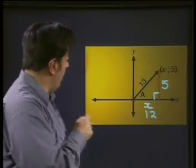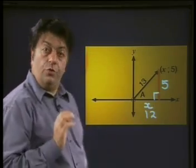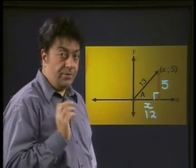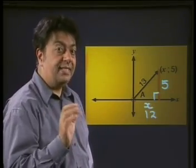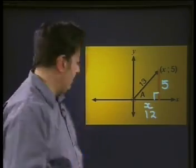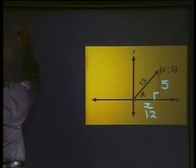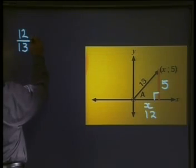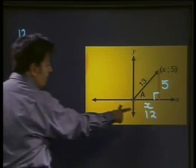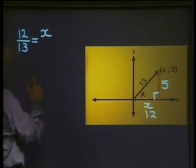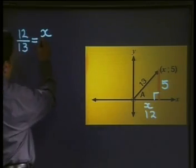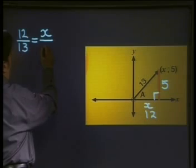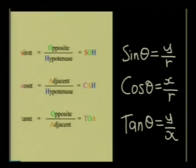Now, looking at the diagram, which ratio do you think is represented by 12 divided by 13? Let's write that down. 12 divided by 13. And if I write it with the corresponding variables, that is x divided by r.